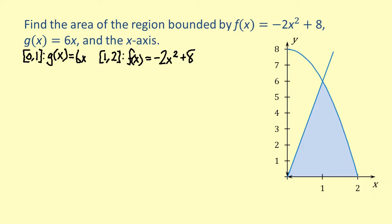So we can find the total area by evaluating two separate integrals, one over each interval. Let's find the area over the first interval. We'll call that area A1.